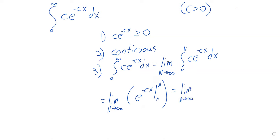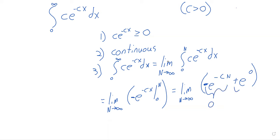The integral has to be one, to represent the idea that something happens with probability one. Because we put this negative sign here, that gives us a negative sign when we take the antiderivative. As n goes to infinity, this term goes to zero, and e to the zero is one. So this integral is one — the area under the curve is one. The probability that something happens when you run an experiment is one.